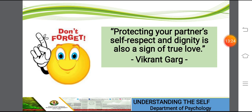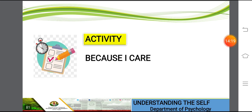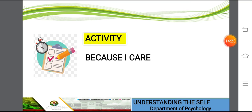Remember: protecting your partner's self-respect and dignity is also a sign of true love. Self-respect and dignity are partners and we should consider and radiate that to our partners as well. You have an activity entitled 'Because I Care' located on page 20 of your workbook. It is done to create ways to minimize teenage pregnancy. Think of programs or activities and suggest strategies or methods on how to minimize teenage pregnancy in your community. Use the table below as your guide.